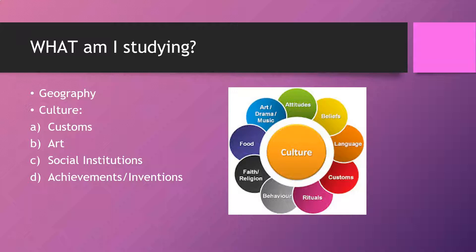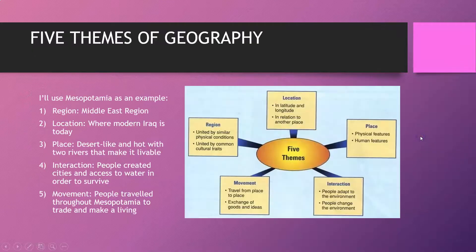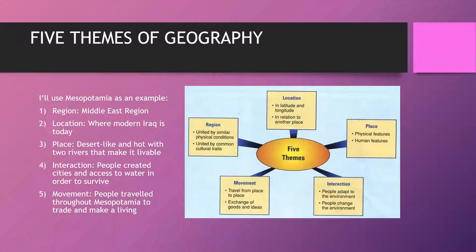So, what are you studying? You are studying two things: geography and culture. In terms of geography, you'll most likely be focusing on three of the five themes of geography — region, location, and place. For example, using Mesopotamia, you could say Mesopotamia was in the Middle East where modern-day Iraq is, and it was a hot desert-like place with two rivers, the Tigris and Euphrates, that cut through and made it very prosperous.